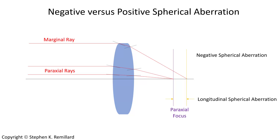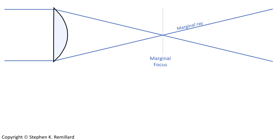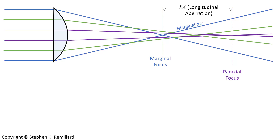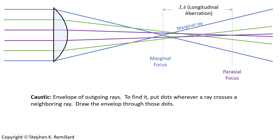If the marginal focus is behind the paraxial focus, we refer to it as negative spherical aberration — typically the case for a diverging lens. A converging lens will usually have positive spherical aberration. Following all rays into a plano-convex lens: the marginal rays meet at the marginal focus, and the paraxial rays meet at the paraxial focus. Rays between these two groups meet somewhere in between. If you put a dot where every ray crosses a neighboring ray, you trace out the caustic. Connecting those dots gives you the caustic curve.